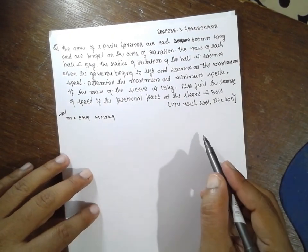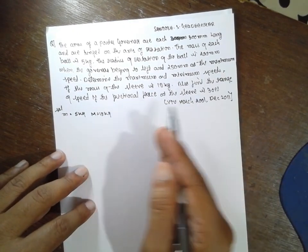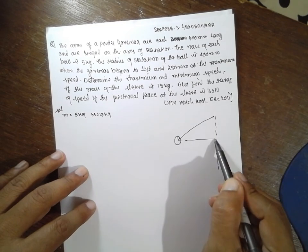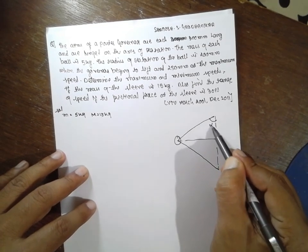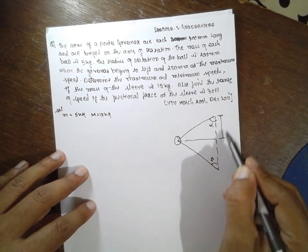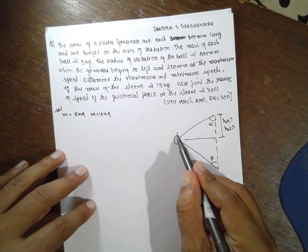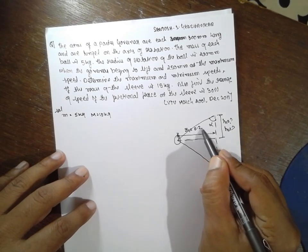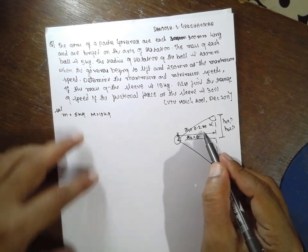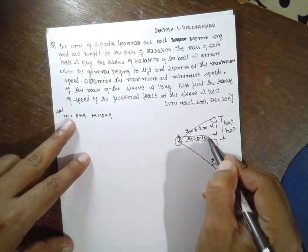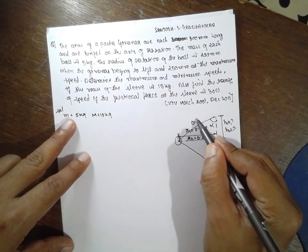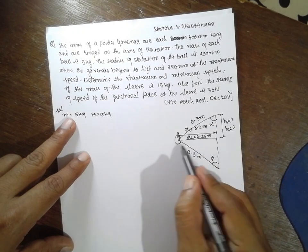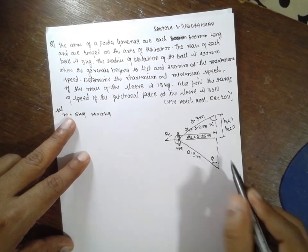Looking at the diagram, since there is no sleeve distance from the axis, α is equal to β. We need to find H1 and H2 because R1 and R2 are given. R1 is 200 mm, which is 0.2 meter. R2 is 250 mm, which is 0.25 meter. The arm length is 0.3 meter. Labels on the diagram include BMG, EFC, and MW divided by 2.